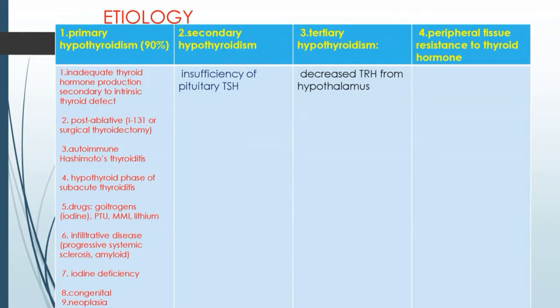Causes of primary hypothyroidism include inadequate thyroid hormone production secondary to intrinsic thyroid defect, post-ablative or surgical thyroidectomy, autoimmune Hashimoto's thyroiditis, hypothyroid phase of sub-acute thyroiditis, drugs such as propylthiouracil, methimazole, lithium, infiltrative diseases like progressive systemic sclerosis, amyloidosis, iodine deficiency, congenital causes, and neoplasia.